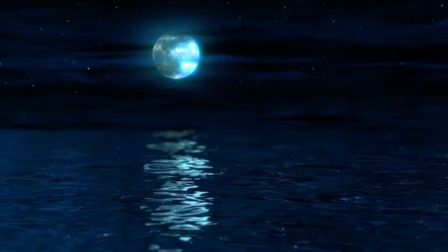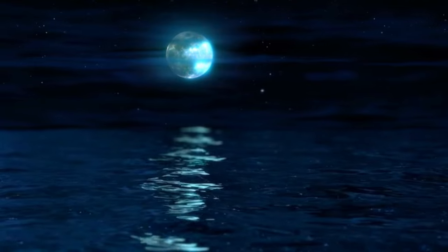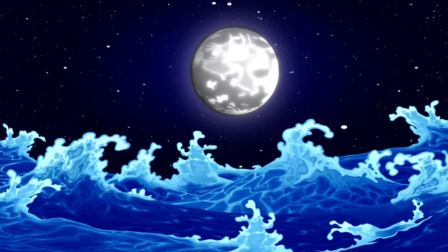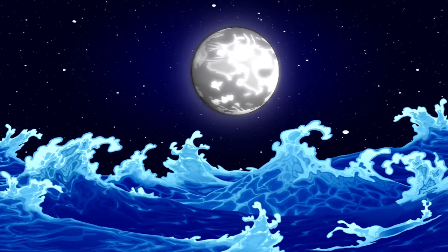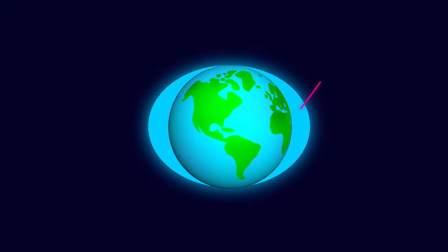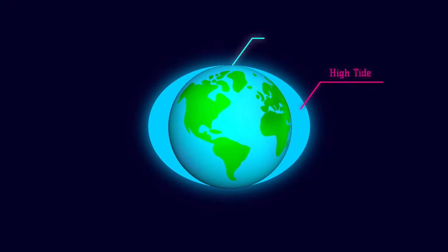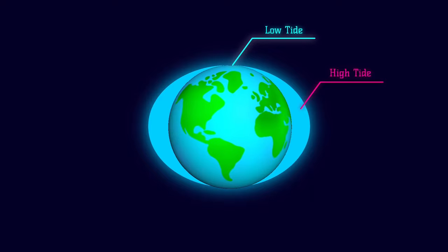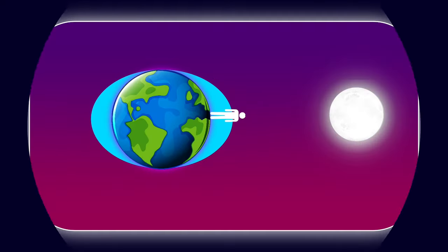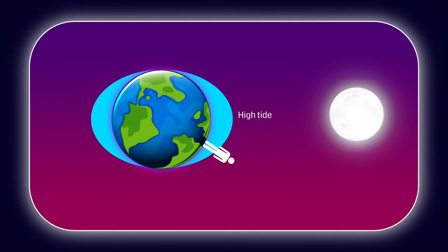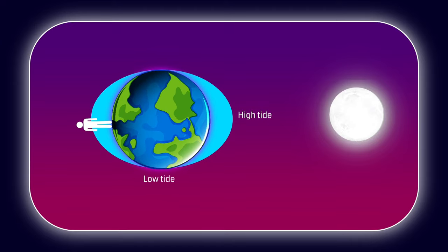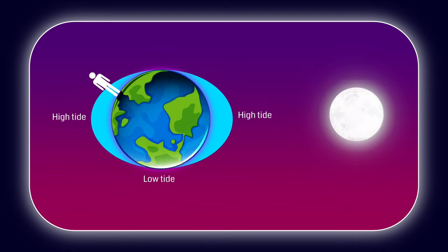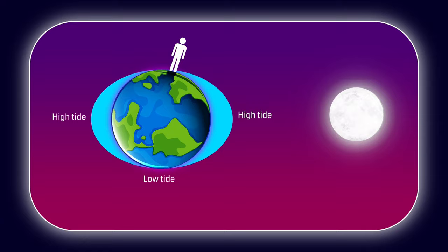Earth's surface is 70% made of water, and that water is drawn toward the moon. Whichever side the moon orbits around the earth experiences the bulging effect of the moon. High tide occurs where the bulges are high, and low tide occurs where it is low. So in 24 hours, when the earth completes one full rotation, high tide occurs twice and low tide occurs twice.